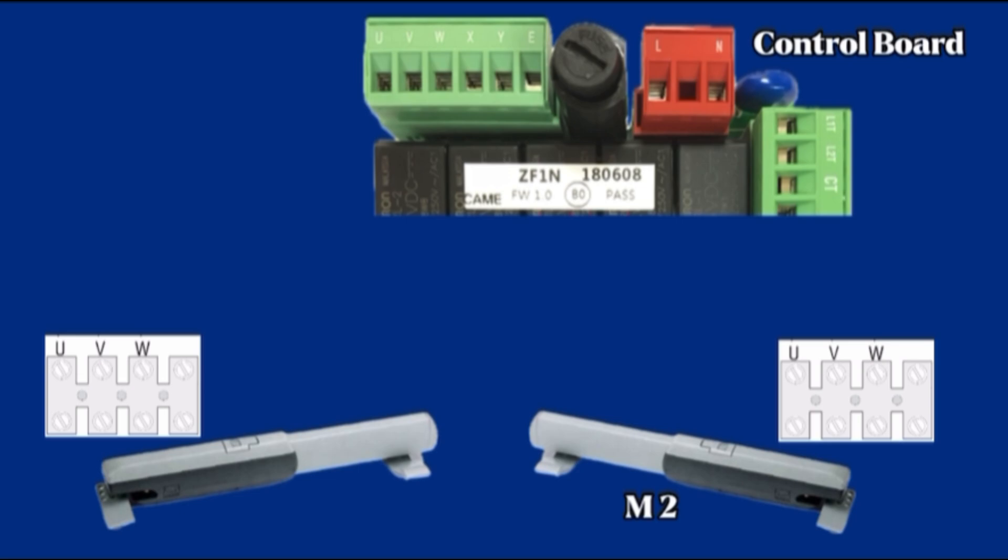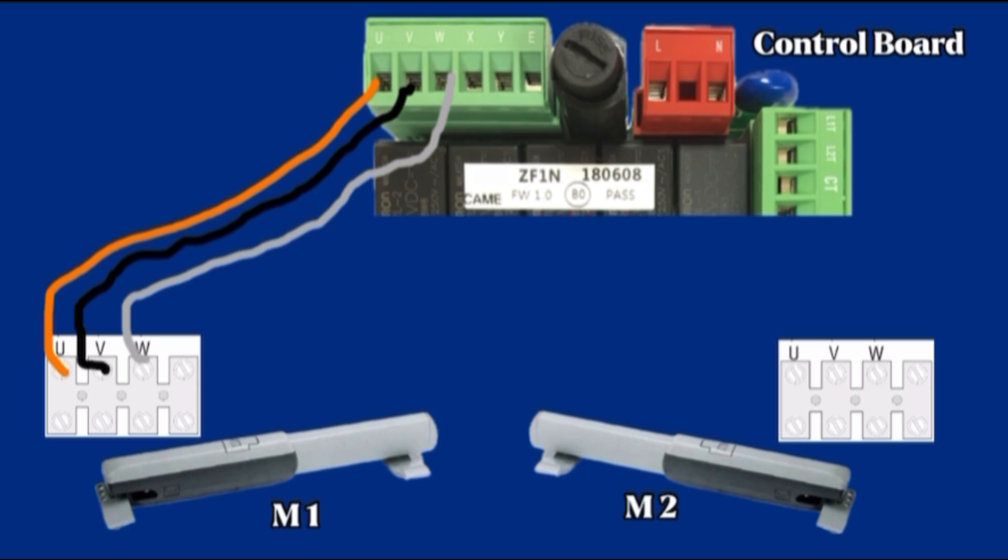Motor connection overview. Motor 1 primary leaf connections. Terminal U connect to U of motor 1. Terminal V connect to V of motor 1.